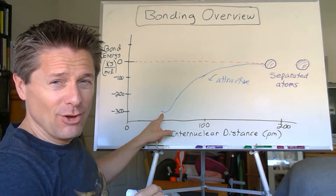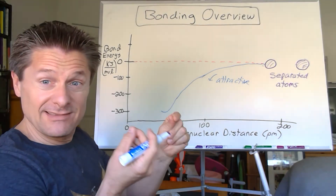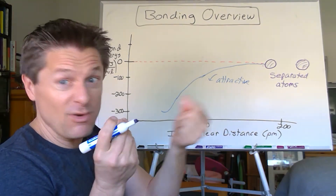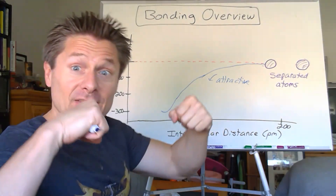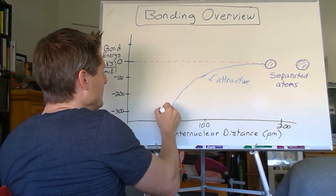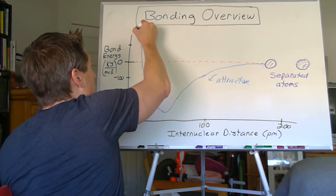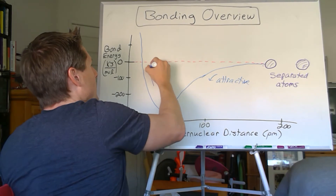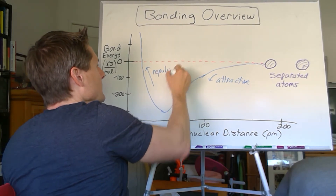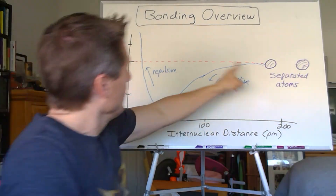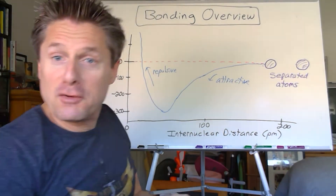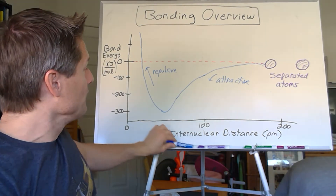Then we get close enough where the nuclei start to sense each other and the curve tails off. Getting too close, the protons in the nucleus of atom one and atom two start to repulse each other - like two magnets south-to-south - and the energy shoots up. So this direction on the graph is repulsive, shooting up to higher energies.